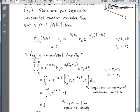So now we can ask, is F of T1, T2, this joint distribution, is this a normalized density?